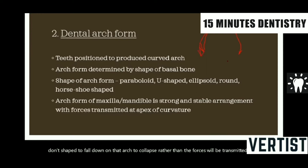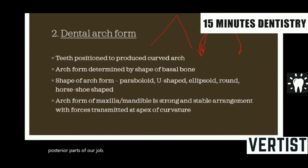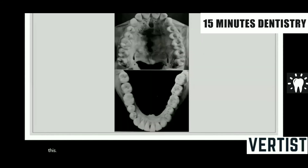The same thing is applicable in our jaw also. Why do they have to be U-shaped? Because in a U-shape, all the forces will be transmitted directly to the stronger posterior parts of our jaw. Secondly, a U-shape would have more space as compared to a V-shape. In case of the maxilla, the maxillary arch would always be larger compared to that of the mandibular arch.